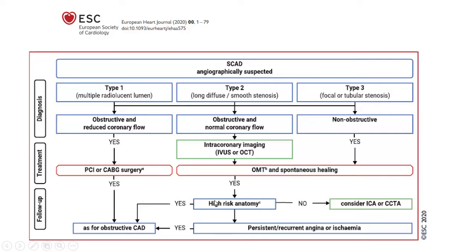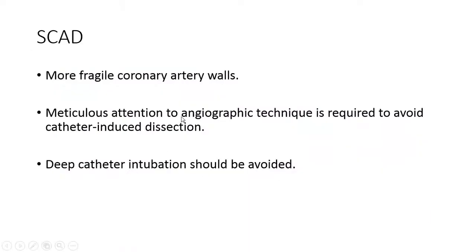Or if there is high-risk anatomy, an intervention — either PCI or CABG — could be considered. Otherwise, we could treat them medically and consider intracoronary imaging or coronary angiography for patient follow-up. During angiography or intervention, we should consider that these patients have more fragile coronary artery walls. Meticulous attention to angiography technique is required to avoid catheter-induced dissection, and deep catheter intubation should especially be avoided.